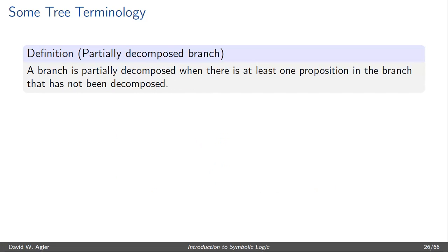A partially decomposed branch, or perhaps a better term, an undecomposed branch, is a branch where there is at least one proposition or formula in the branch that has not been decomposed. In this example, while line 1 has been decomposed at lines 3 and 4 using conjunction decomposition, line 2 has not been decomposed. That is, line 2 is a proposition that can be decomposed but has not been decomposed. In other words, we haven't given a full demonstration or graphical display of the conditions under which lines 1 and 2 are true. We've only illustrated the truth conditions for line 1 by stacking P and R at lines 3 and 4. What we haven't done is given a display of the conditions under which both lines 1 and 2 can be true.